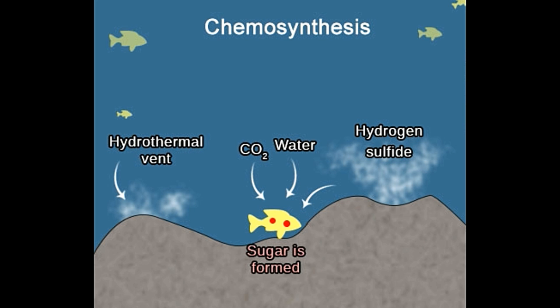Process rate: For photosynthesis, atmospheric temperature, amount and intensity of sunlight falling on the leaves, and CO2 concentration influence the rate of photosynthesis. For chemosynthesis, the amount of hydrogen sulfide seeping in from the hydrothermal vent determines the rate of chemosynthesis.